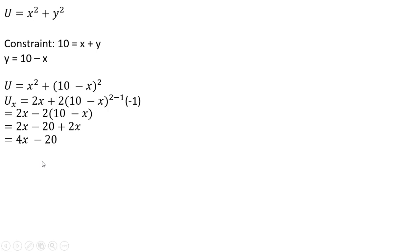So 4x minus 20 equals 0. X equals 5. Plugging this 5 back into our constraint, Y equals 5. If we evaluate the utility function at x equals 5, y equals 5, we'll get 25 plus 25, or 50.